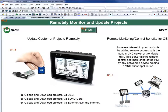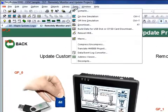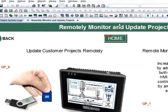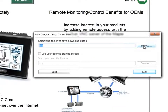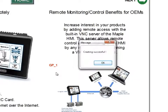Go to the Tools menu and select Build Data for USB disk or CF SD card download. Select the directory you want to save the data to, then click the Build button. This will build data that can be automatically downloaded to your HMI via USB or SD card.